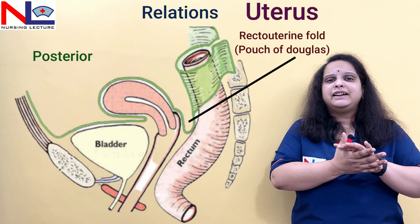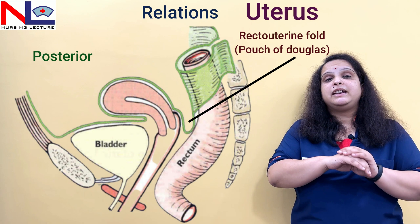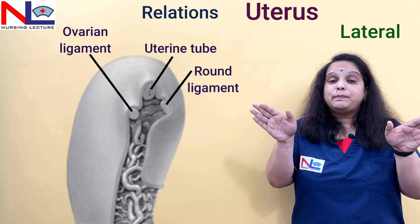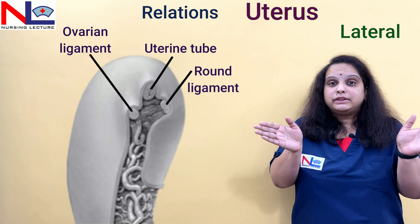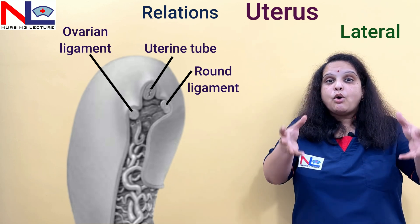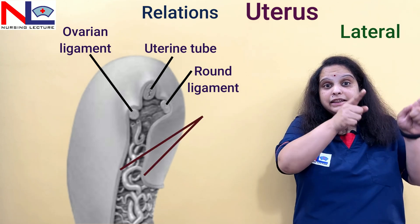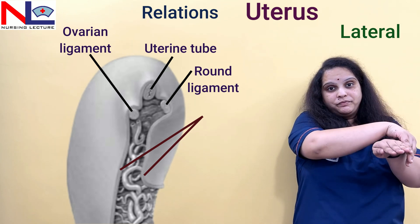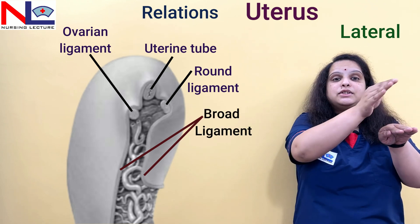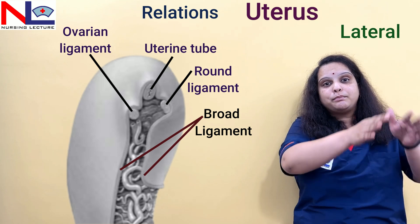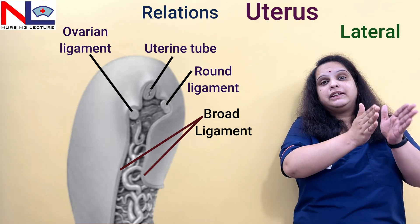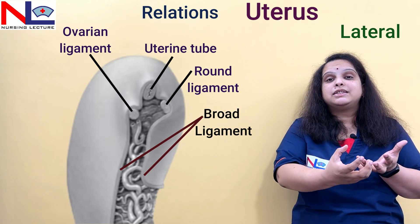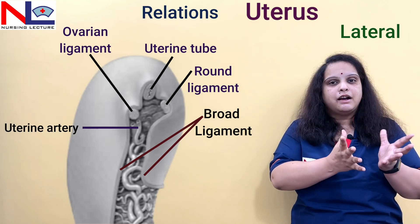Anteriorly the uterus is partially covered by peritoneum, but posteriorly the peritoneum covers it completely. Laterally, on the superior aspect, there are the two uterine tubes, so the peritoneum is not able to cover the whole lateral aspect of the uterus. The peritoneal folds create a sheet over the tubes — a double fold of peritoneum — forming the broad ligament, which contains connective tissue, arteries, vessels, and nerve innervation.